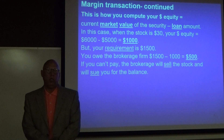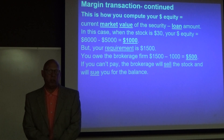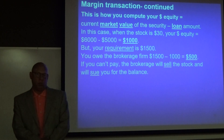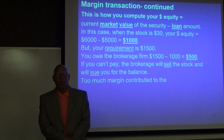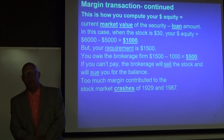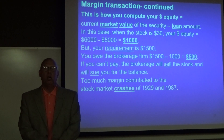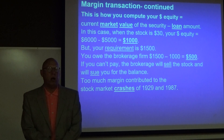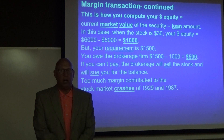This is what happened in 1929 and in 1987 — that's why many people went bankrupt. Too much margin contributed to the crashes of 1929 and 1987. The total amount loaned on margin is a statistic that is followed very closely.